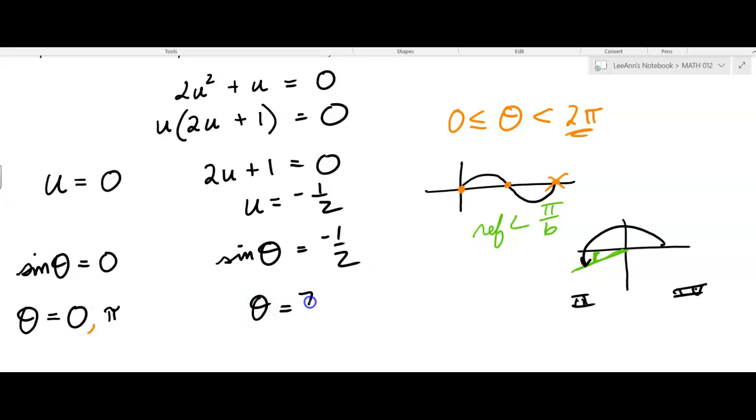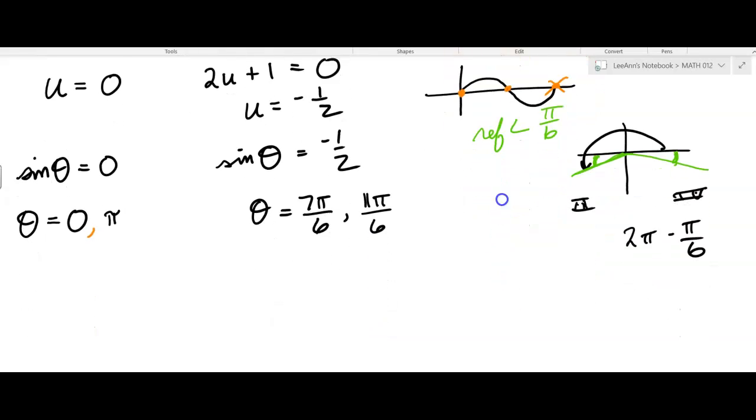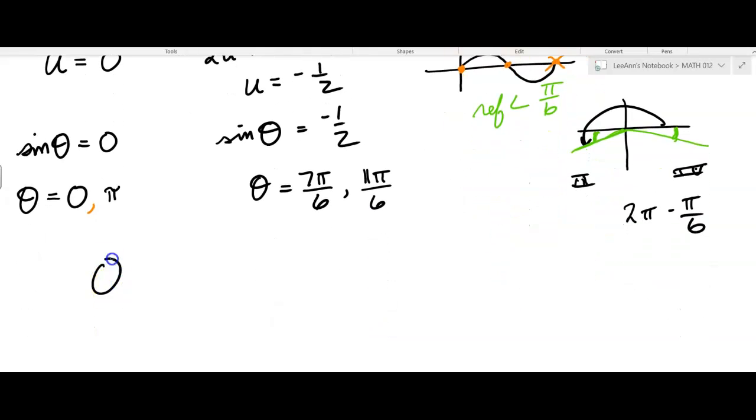So theta equals seven pi over six. But then what about the fourth quadrant? In the fourth quadrant, the reference angle's right here, and so you're thinking about two pi minus pi over six, or twelve pi over six minus pi over six, which is eleven pi over six. So there are four answers. We usually put them all together.